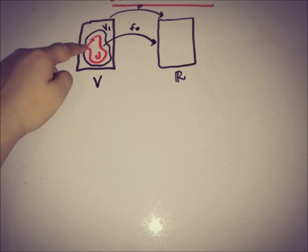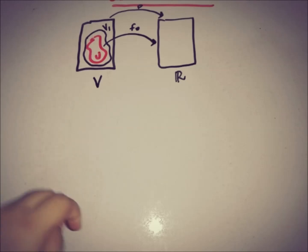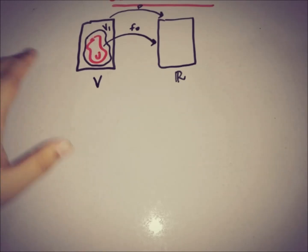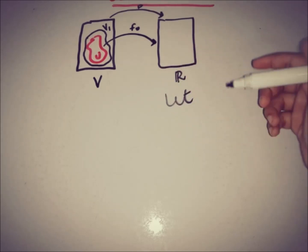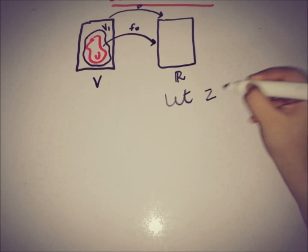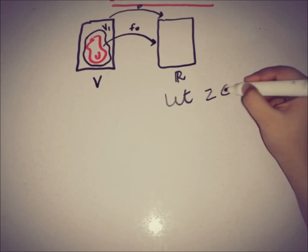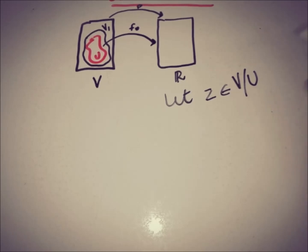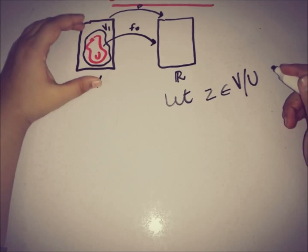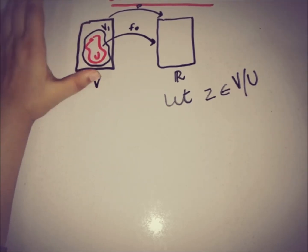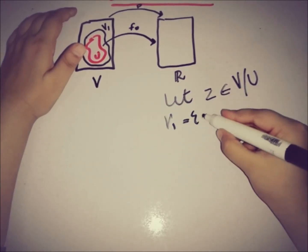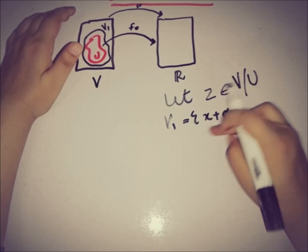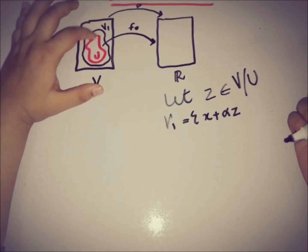The first step is to find a space V₁ that is larger than U but less than V and not equal to V, so we can talk about elements both inside U and outside U but within V. We take an element z from V that is outside U. The elements of V₁ must include elements of U as well as elements outside U. We make V₁ consist of elements of the form x + αz.